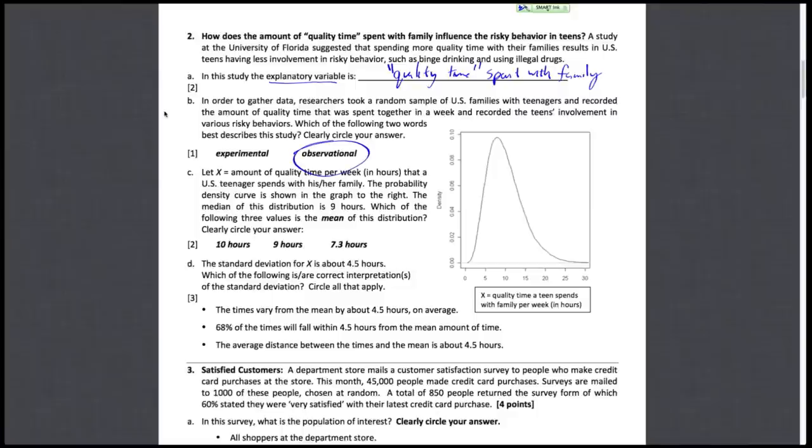For our next question, we have x being the amount of quality time in hours that a U.S. teenager spends with their family. They give us a probability density curve to the right. The median of this distribution is given as 9 hours and which has to be the mean of the distribution. So here, we know that the median is 9. And it's pretty clear to see that this distribution is skewed to the right.